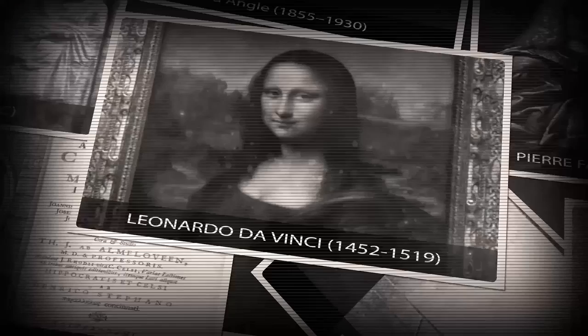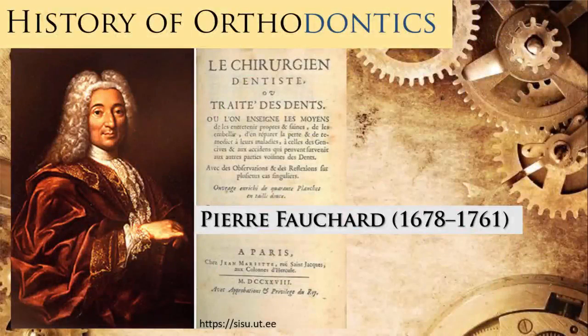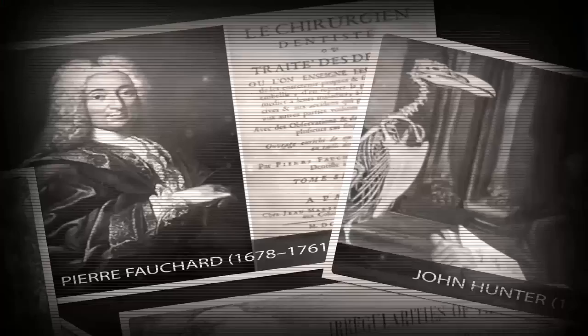But the pioneer in the description of occlusal problems with indications of solutions was the author of the first book in dentistry. Pierre Fauchard presented the first orthodontic appliance, the bandeau, which consisted of a kind of horseshoe to which teeth were tied with silver ligatures. The appliance worked by expanding the teeth, but they didn't know how and why the teeth were moving.